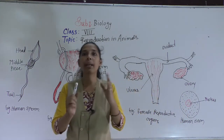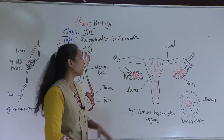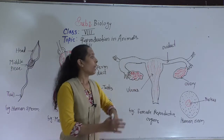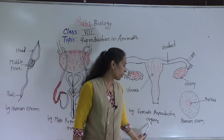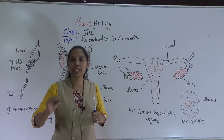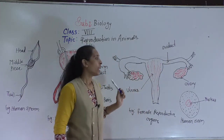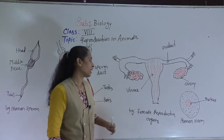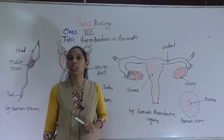Now we will discuss the female reproductive organs in humans. The female reproductive system consists of three main parts: the oviduct, which is also called the Fallopian tube; the ovaries — there are two ovaries; and the uterus. These are the female reproductive organs present in humans.